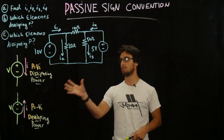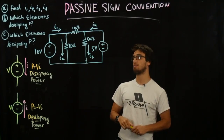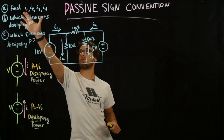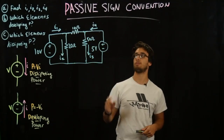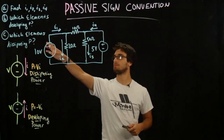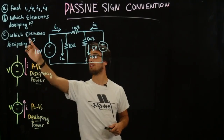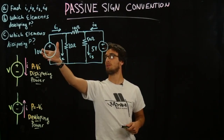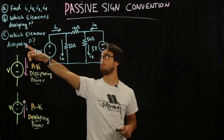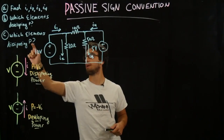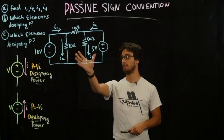Now we're going to apply this to our circuit problem. The problem is we want to find currents I1 through I4. The next part we want to know is which elements are developing power and we're going to calculate what that power is. Also, for the third part, we're going to calculate which elements are dissipating power and how much each element that's dissipating power is dissipating.